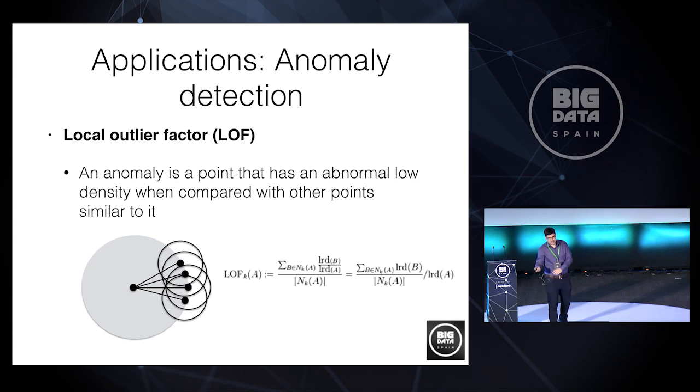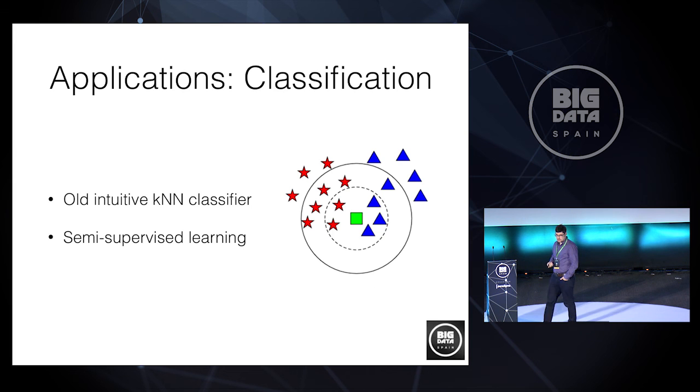We can also do anomaly detection. So there is an algorithm called local outlier factor. It has been overlooked for a while because it doesn't scale well. But if you combine this with the hashing, then it becomes feasible to apply to big datasets. So it's a very quick solution to find anomalies in your dataset, especially in inner cases, in inner phases of projects. And, of course, we could do KNN-classification again. If you combine with this, this can also have impact in scaling out semi-supervised learning algorithms. We're having a look on that nowadays.